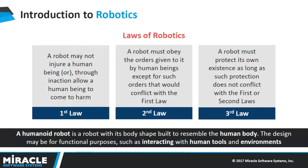The main three laws of robotics are: the first law is robots must never harm human beings; the second law is robots must follow instructions from humans without violating the first law; and the third law is robots must protect themselves without violating the other two rules.